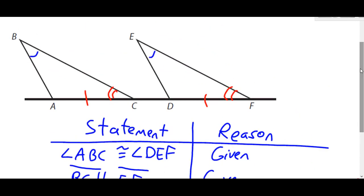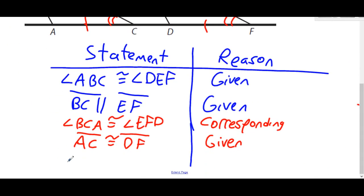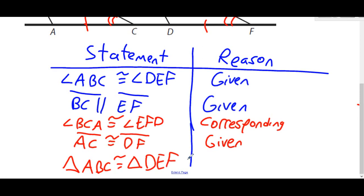Looking at our drawing now, we have two angles and the side that's not included, congruent to those same corresponding angles and side in the other triangle. So triangle ABC is congruent to triangle DEF by angle-angle-side — two angles, side not included.